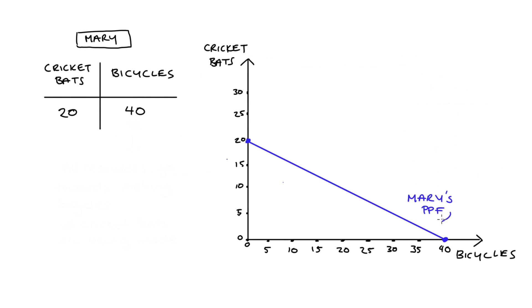The line here will tell us about all of the possible combinations of cricket bats and bicycles that Mary can make if she uses all of her resources.